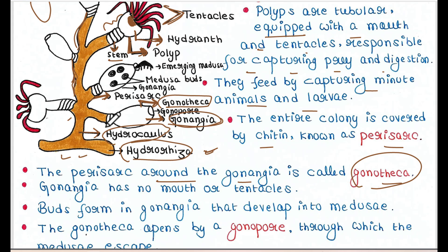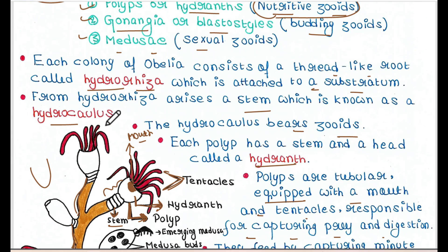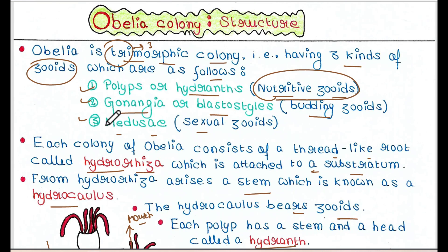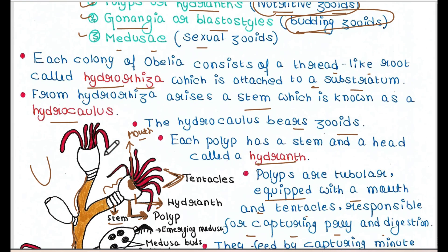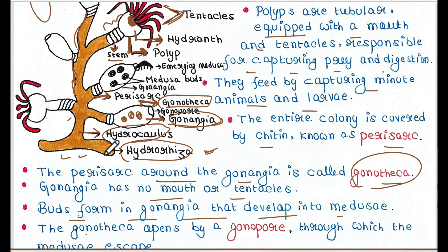Gonangia have no mouth or tentacles — unlike polyps, gonangia do not have any mouth or tentacles. Buds form in gonangia that develop into medusa. These buds will become medusa, which is why gonangia are known as budding zooids.